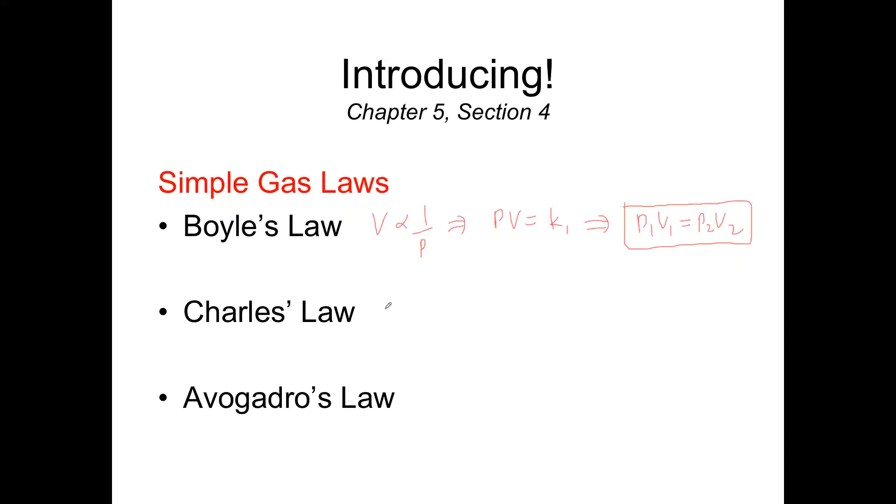Okay, and with Charles' Law, we said something similar. We said volume was directly proportional to temperature. And so we could say V over T was also constant, let's say some other constant. And we could utilize it like the initial and final. So if that's constant, then V over T is not going to change either. The relationship's not going to change, so we could say V1 over T1 is equal to V2 over T2, and that was Charles' Law.